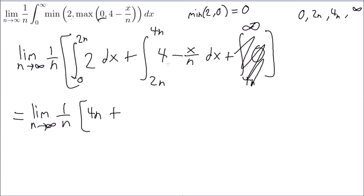This is plus, let's see, 4, then 4, let's see, 4n minus 2n, that's 2n, so that's 8n. And then here we have minus, minus, it's x squared over 2n, from 4n to 2n.